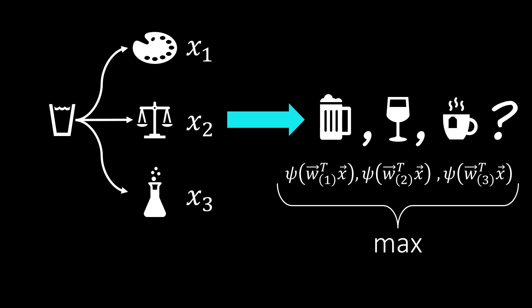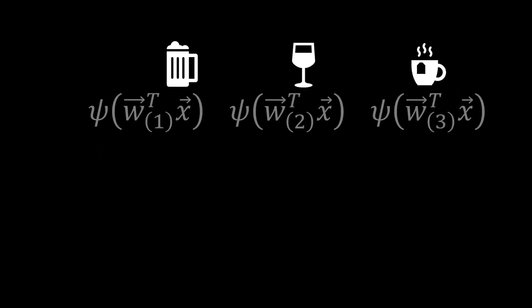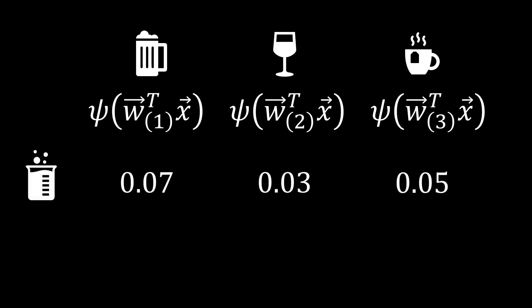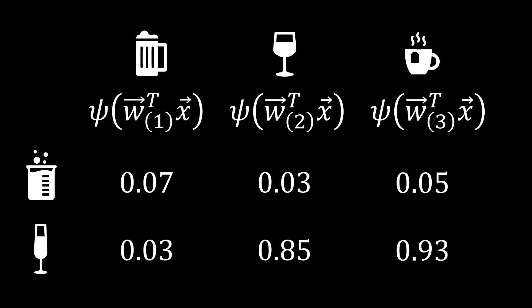If the models are trained well, we should get low probabilities for a liquid that belongs to none of the classes, allowing us to identify these liquids as belonging to some other class. However, for some liquids, multiple binary classifiers might assign a high likelihood, claiming it belongs to their corresponding class. While we can simply assign the class with the highest likelihood, this might not be the best choice, since the classifiers were trained independently.